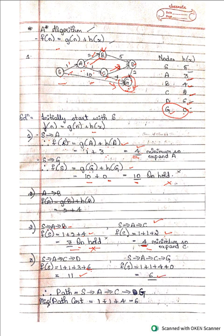The minimum between S→A→C→D (11) and S→A→C→G (6) is 6. Now comparing with the held path S→G (cost 10), the value 6 is still minimum. S→A→B is discarded since we've reached goal G. Comparing S→G (10) with S→A→C→G (6), we choose 6. The optimal path is S→A→C→G.